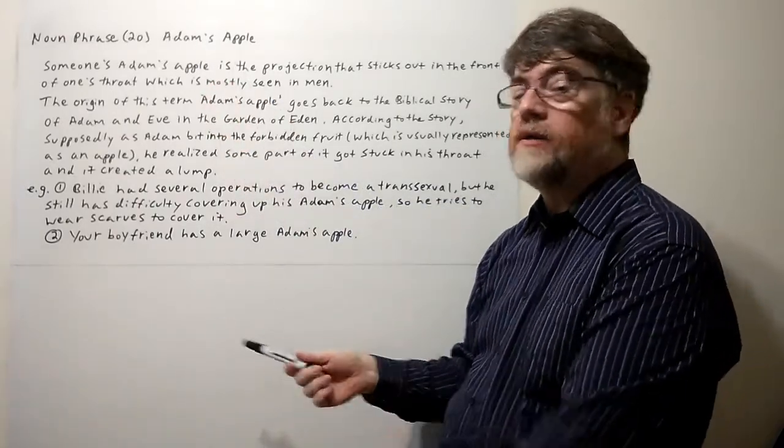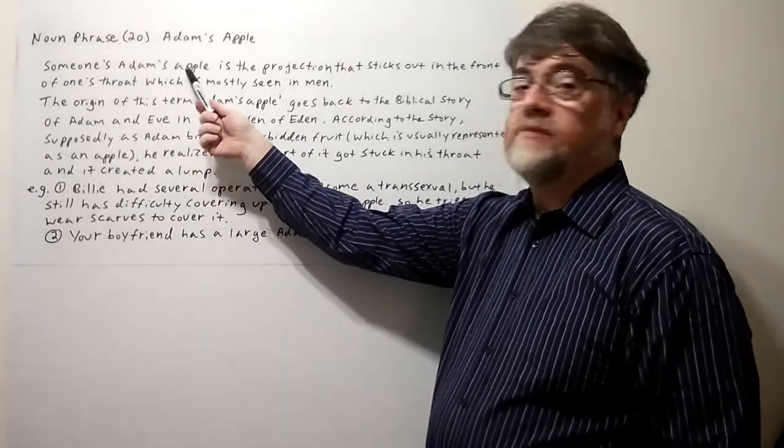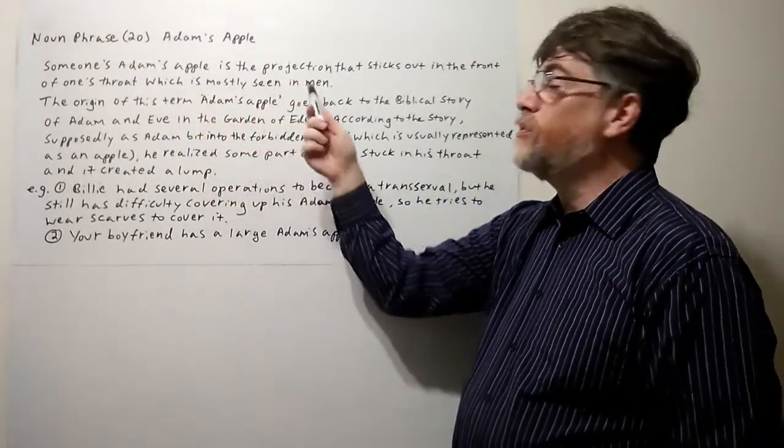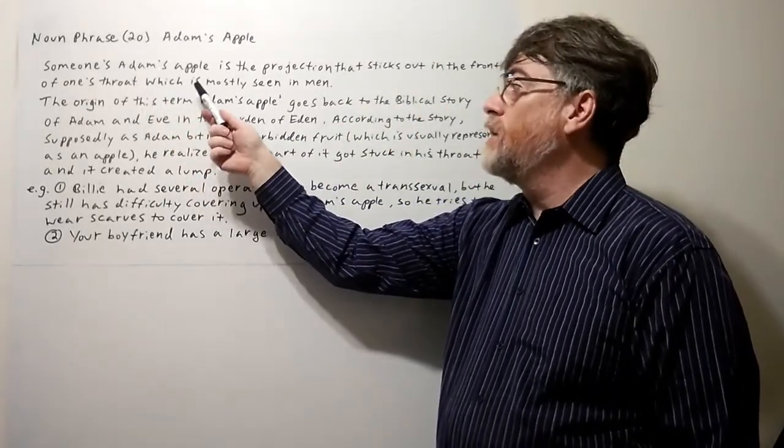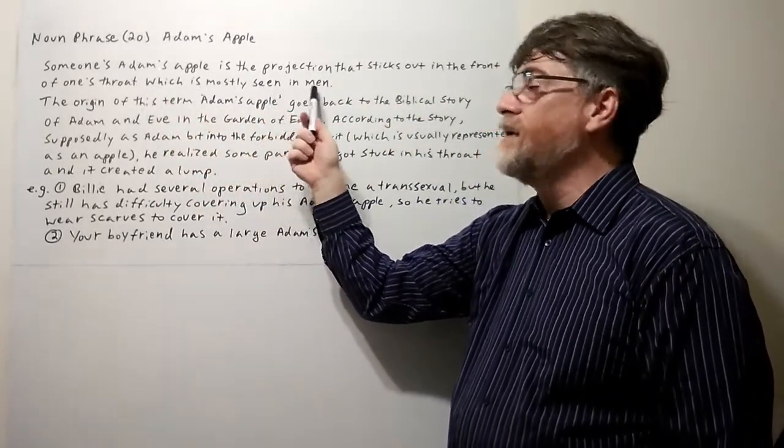Let's look at the note here. Someone's Adam's apple is the projection that sticks out in the front of one's throat, which is mostly seen in men.